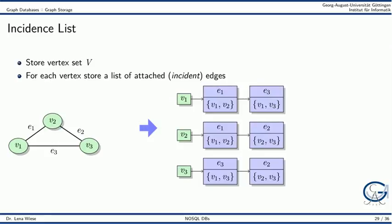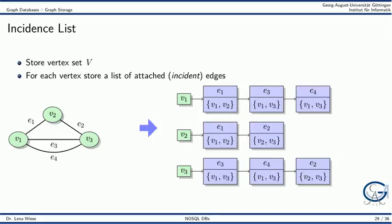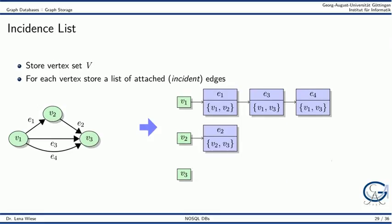The last option for graph storage is the incidence list. We store the vertex set V, and for each vertex we store a list of all its incident edges. In the case of a directed graph, we only store incidence lists for the source nodes of the edges. For multigraphs, because edges have an identity of their own, they simply appear in the incidence list. The same applies in the case of a directed multigraph.